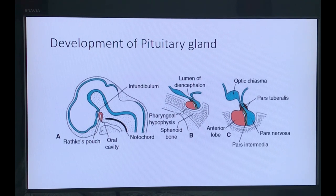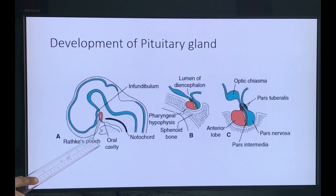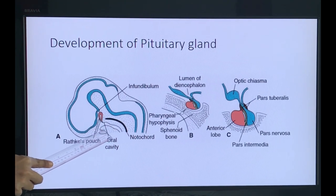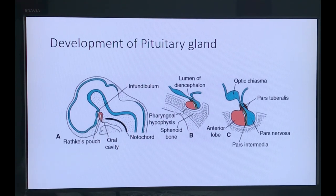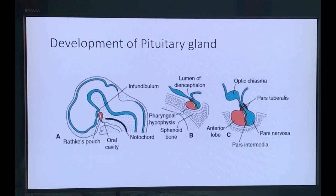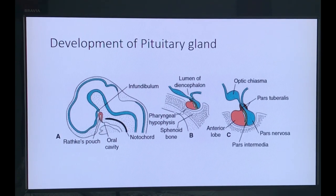The pituitary gland mainly develops from two different parts. One contribution is from the ectodermal outgrowth — an ectodermal evagination near the stomodeum, which is the future oral cavity. Near the oropharyngeal membrane there will be a small outpocketing, a pouch called Rathke's pouch. At around the third week of embryonic development, Rathke's pouch develops near the stomodeum and evaginates, moving toward the dorsal aspect of the developing embryo.